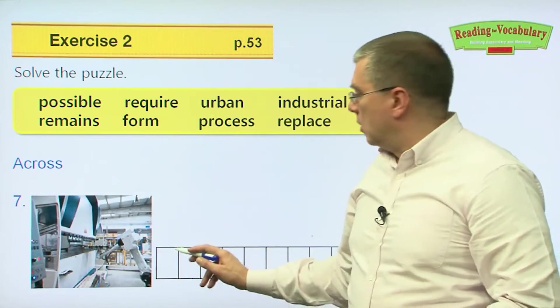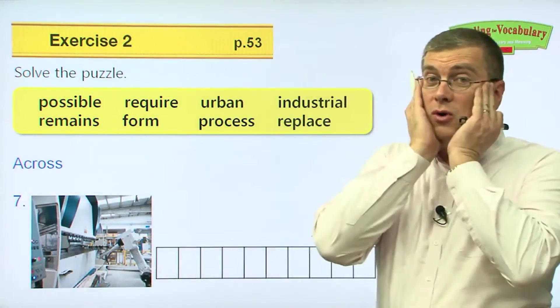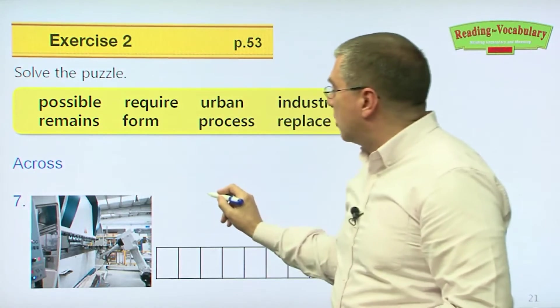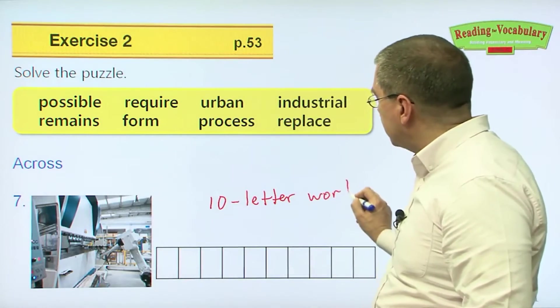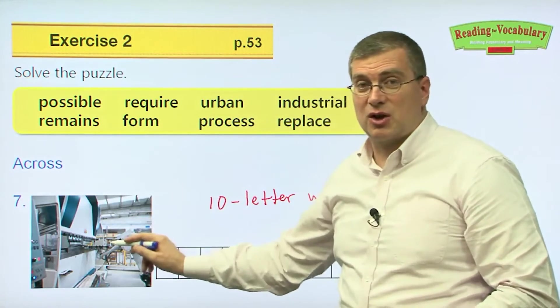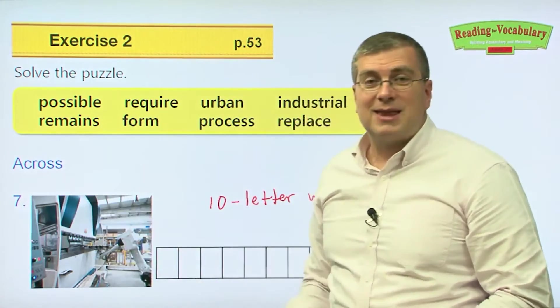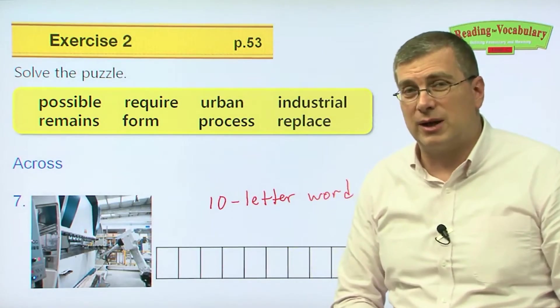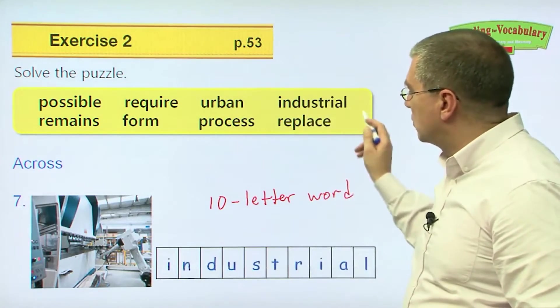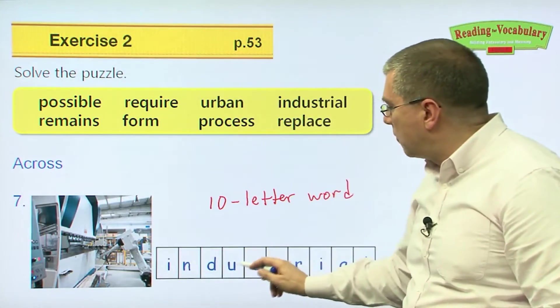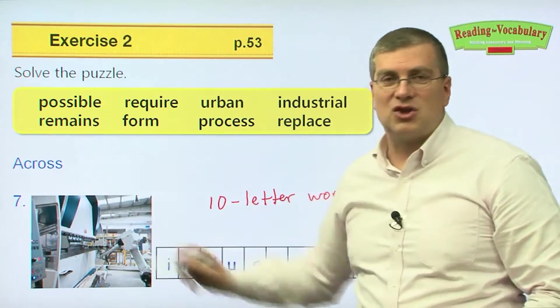Number seven. Oh, my gosh. One, two, three, four, five, six, seven, eight, nine, ten. A ten-letter word. We're looking for a ten-letter word that goes with this picture. Which is a ten-letter word that goes with this picture? In this picture, we can see this is the inside of a factory. So, having to do with factories. Remember the word? We said that was industrial. One, two, three, four, five, six, seven, eight, nine, ten. That's our ten-letter word that matches the picture.